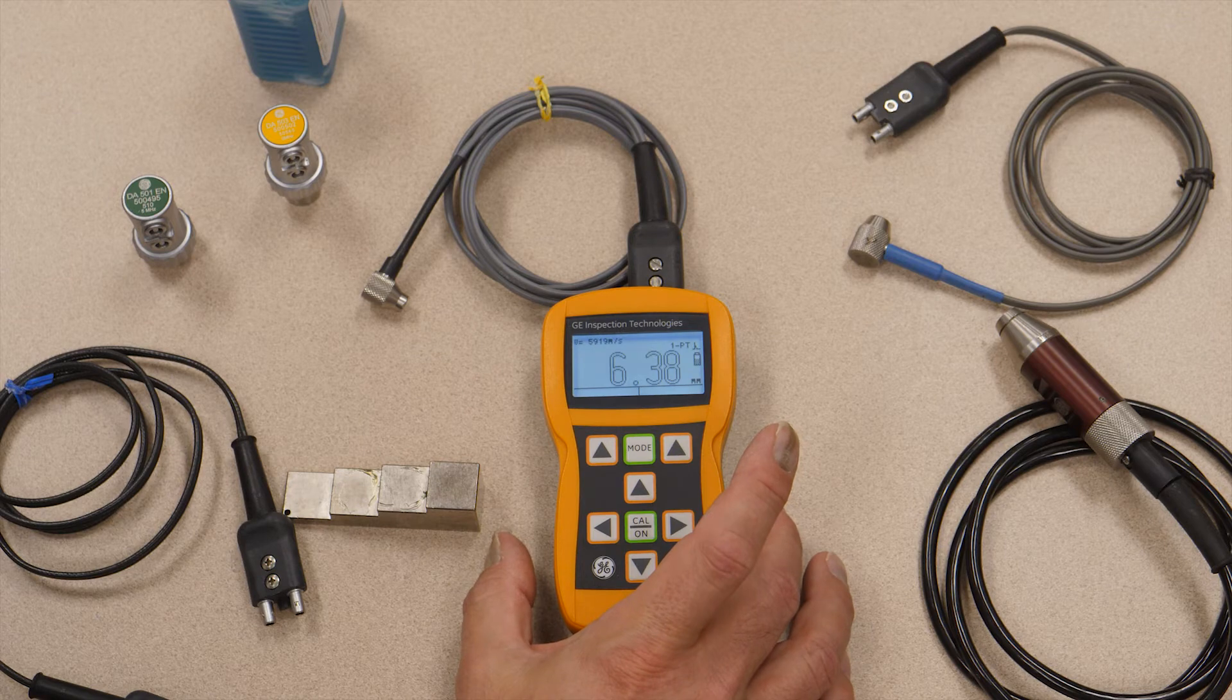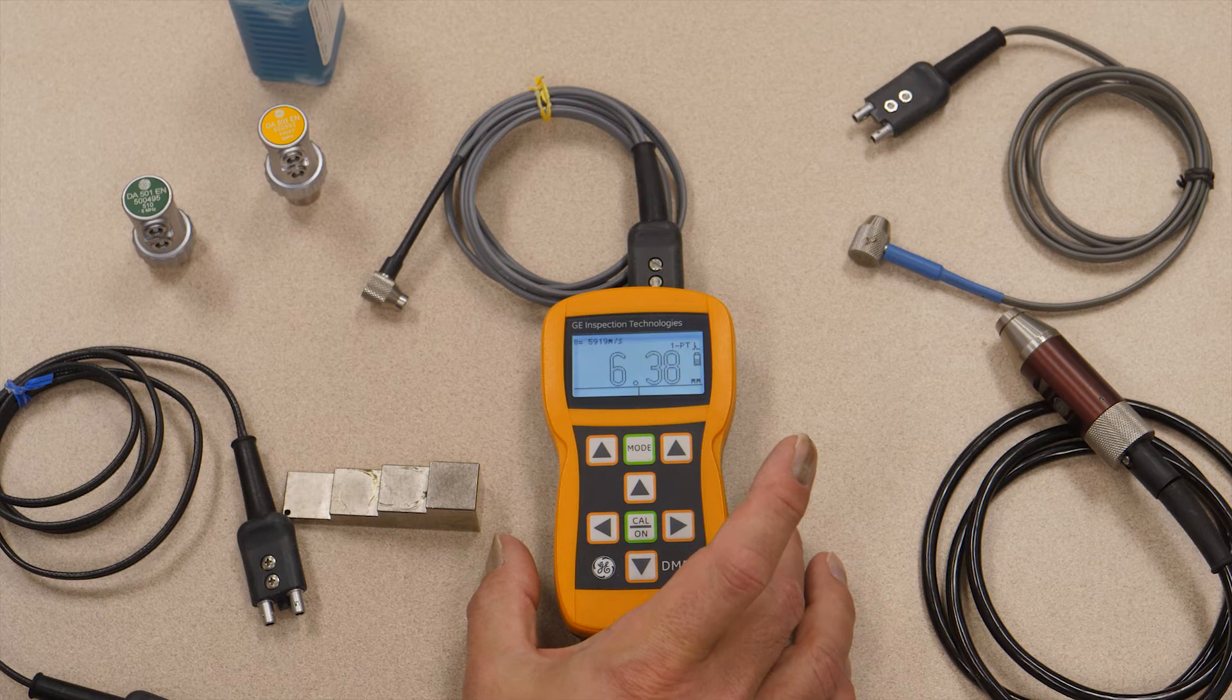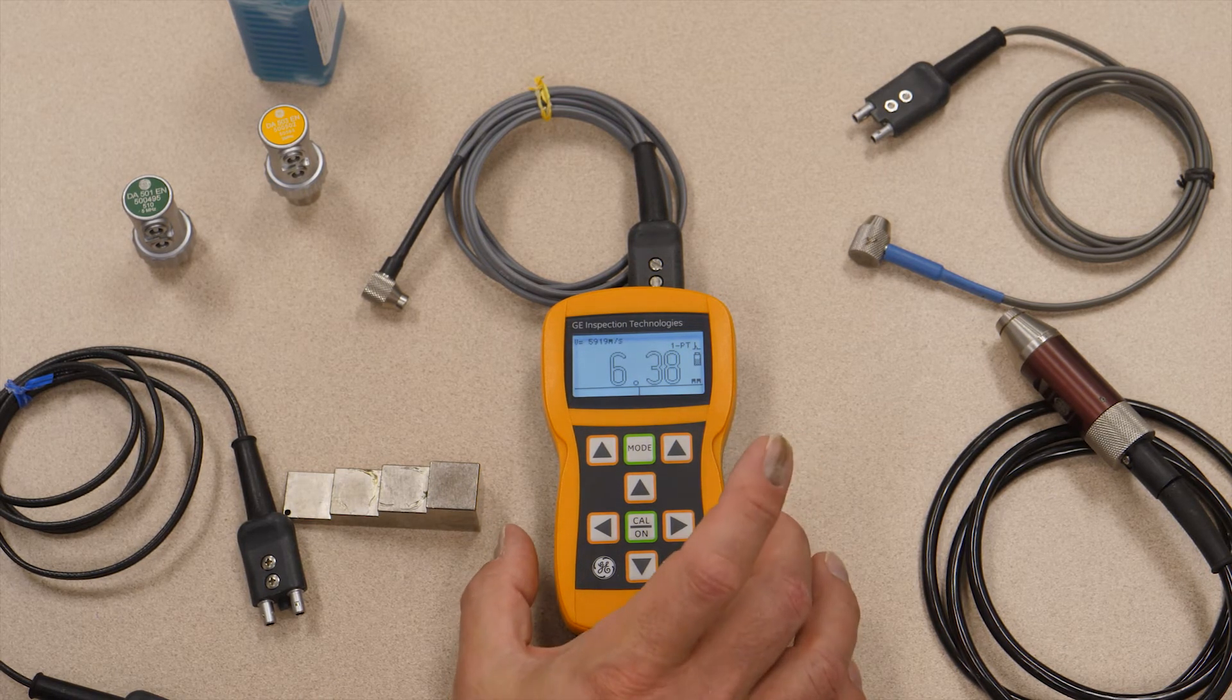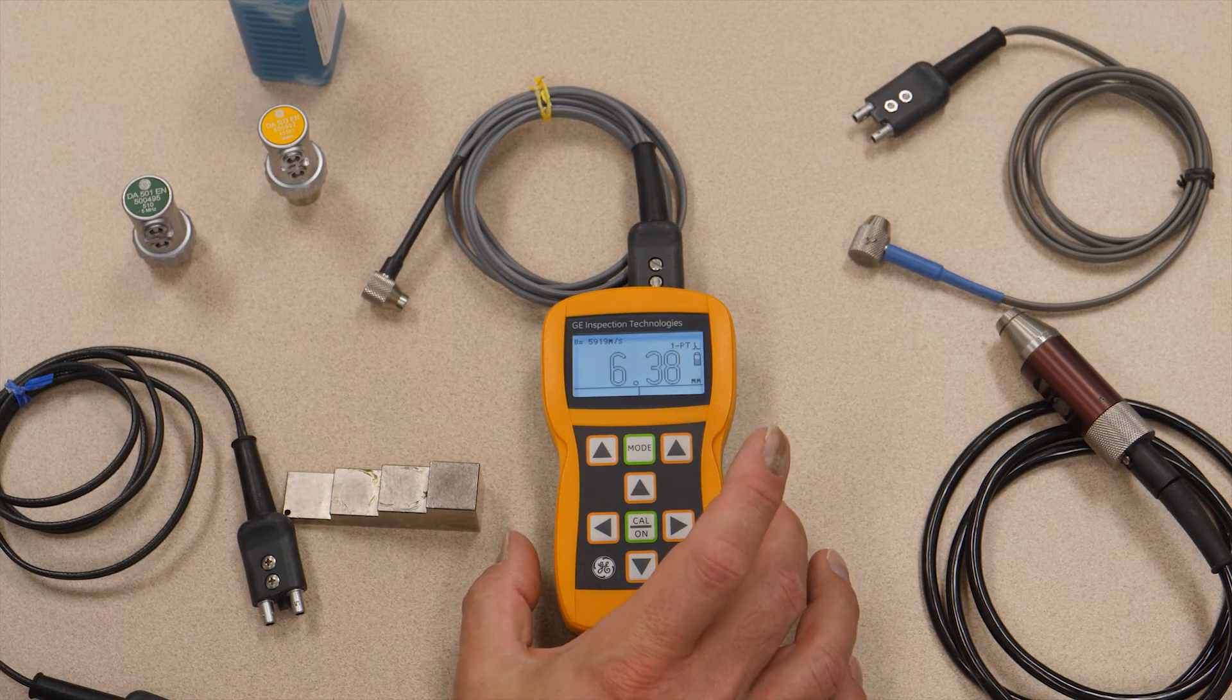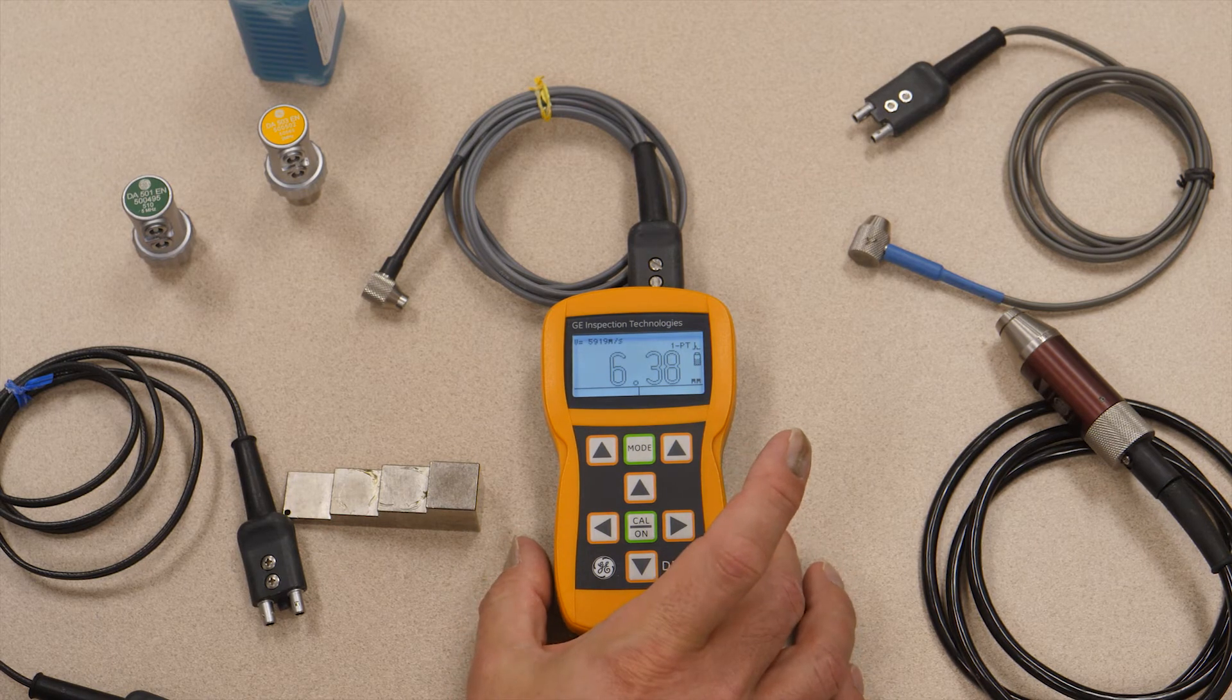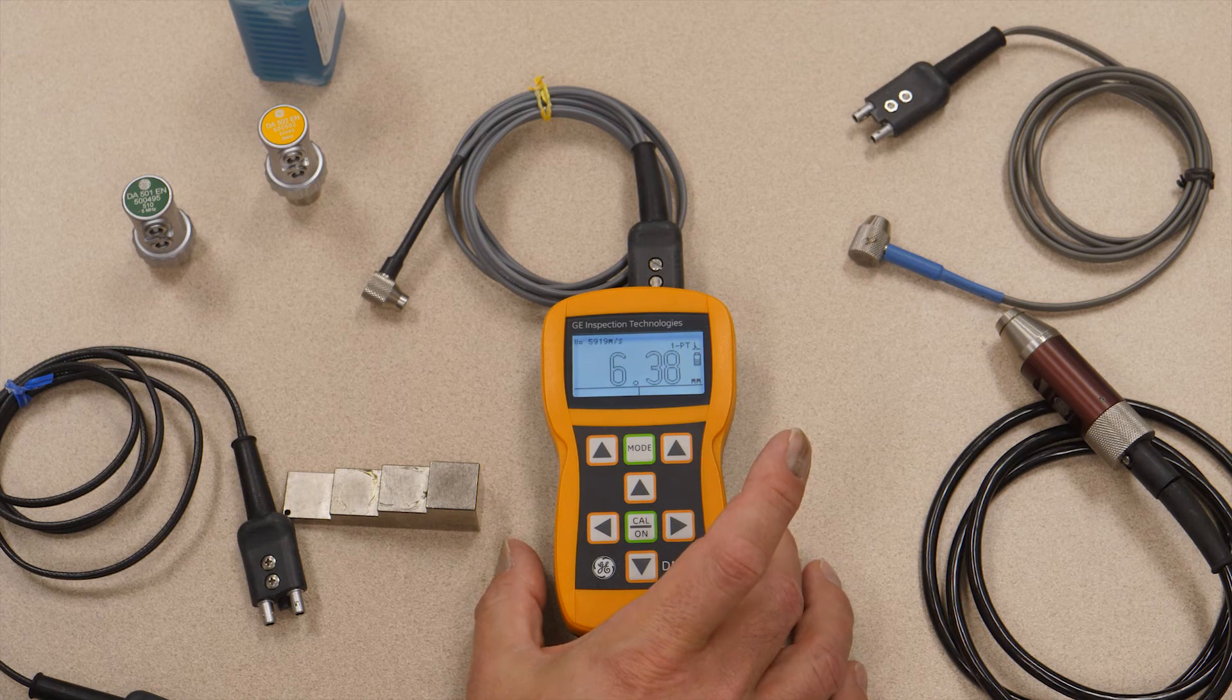And because the paint is typically about one third of the sound velocity of steel, 10 thousandths of paint will increase your thickness measurement by about 30 thousandths of an inch. So we offer the dual multi-mode to compensate for that. It takes multiple back wall measurements through the steel only, ignores the coating thickness, and you get the raw base material thickness.